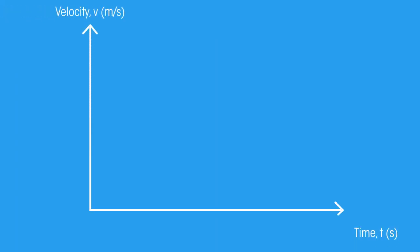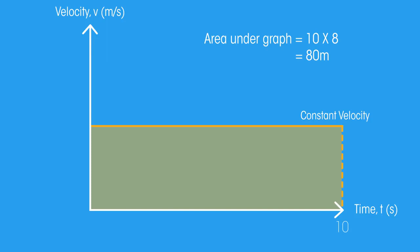Let's start by looking at a simple velocity time graph. To find the area underneath the line, multiply the value on the horizontal axis with the value on the vertical axis. We are multiplying together the velocity of the object and the time it has travelled for. Look at the unit, 80 metres.